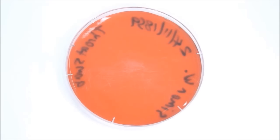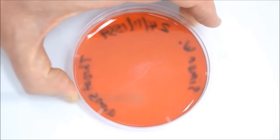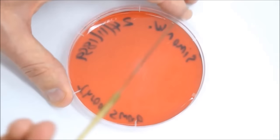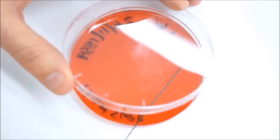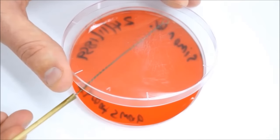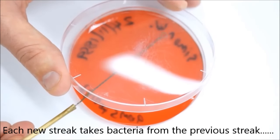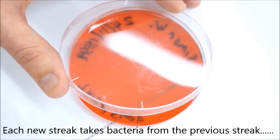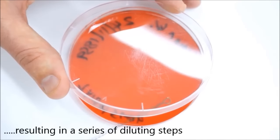Now burn the loop again, nice and red hot. You should turn this plate around and again cool down your loop on the edge. Cool, cool, cool. Drag your loop through the area that you've streaked before and back and forth.